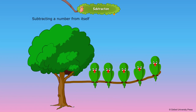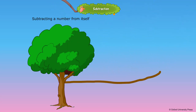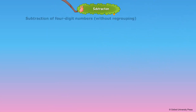Subtracting a number from itself gives 0. There are 5 birds. All the 5 birds flew away. There are no birds left. 5 minus 5 is 0.